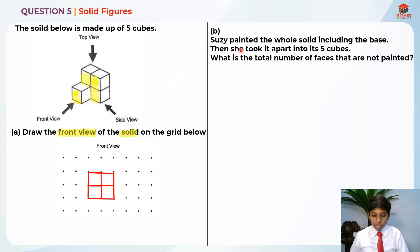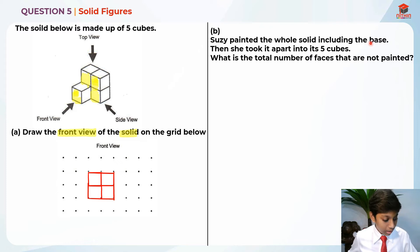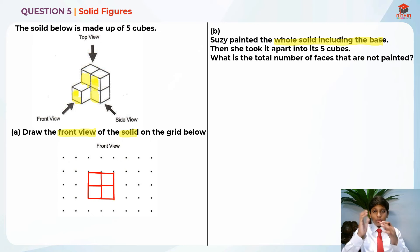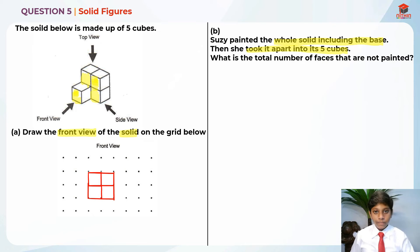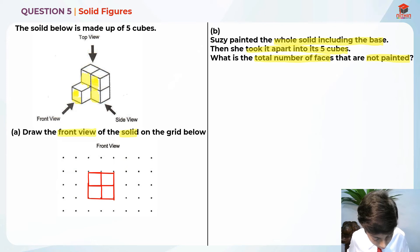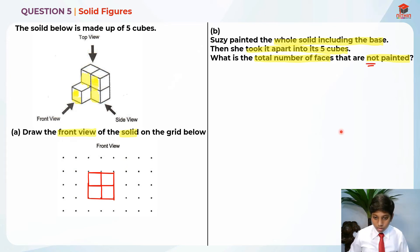Now let's move on to Part B and read the question. Susie painted the whole solid, including the base. Then she took it apart into its five cubes. What is the total number of faces that are not painted? So she painted the whole solid including the base — the underneath part. She took it apart like Lego pieces. They are asking the total number of faces that are NOT painted — not painted. This is really important. They are not asking for painted, but not painted.